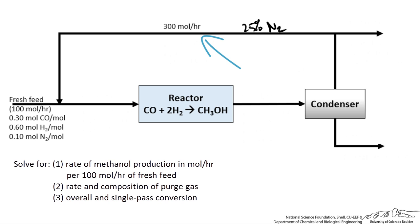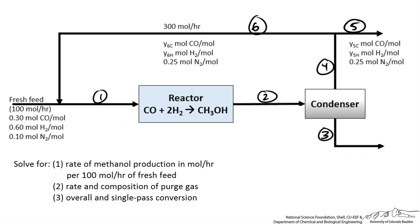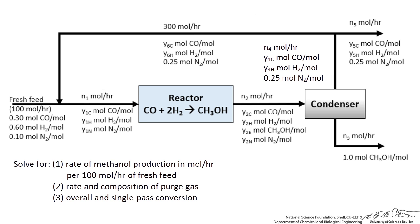Since nothing changes at the mixing point, the composition should also be 25 mole percent nitrogen in the purge as well as what leaves the condenser. The liquid stream is effectively 100 mole percent methanol. Since we do not have flow rates for streams 1 through 5, we assign variables to those flow rates. We also do not know the composition entering or leaving the reactor, so we write those out. Now we have our diagram with all streams labeled with known values and unknown variables.